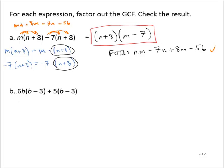Similarly, in exercise b, notice that there is a common factor. The GCF is b minus 3, that quantity b minus 3. So I can write this expression as the quantity b minus 3 times 6b plus 5.